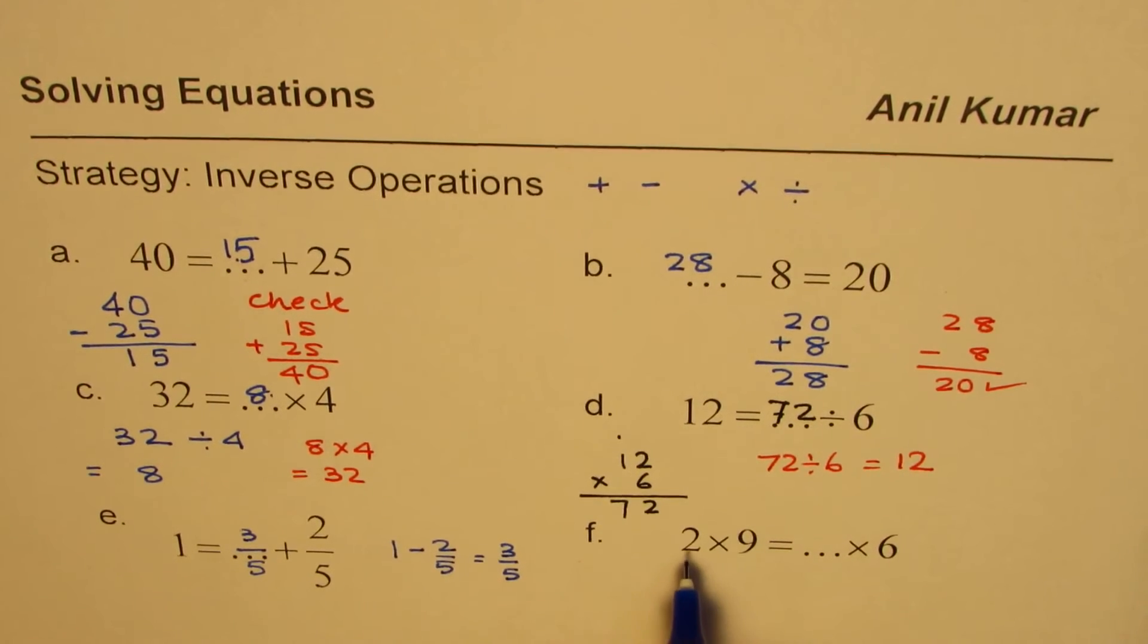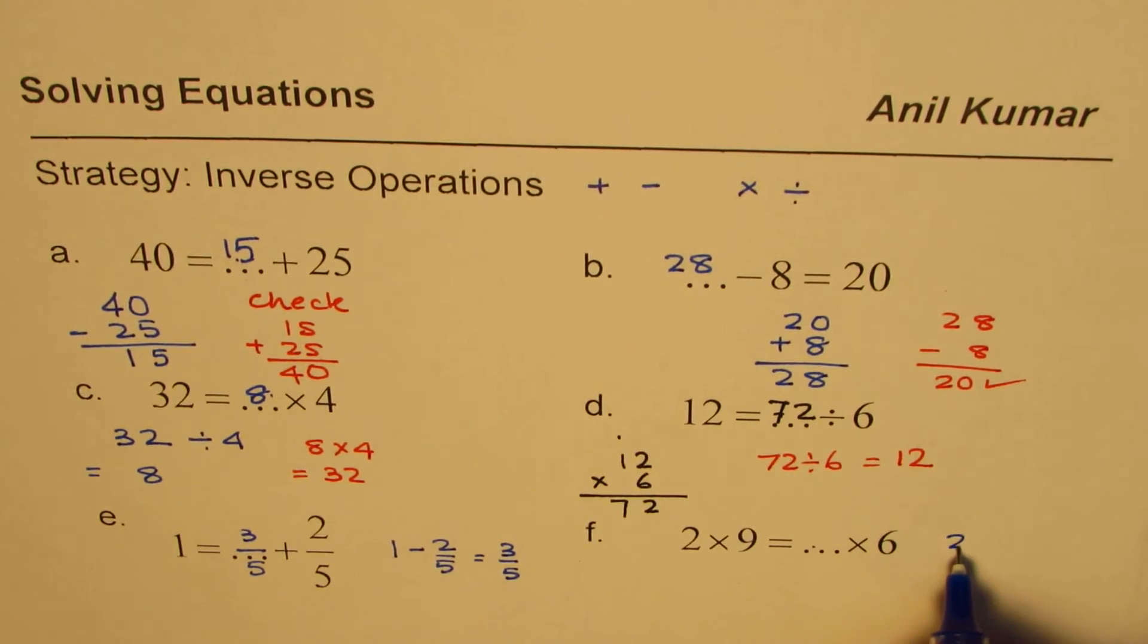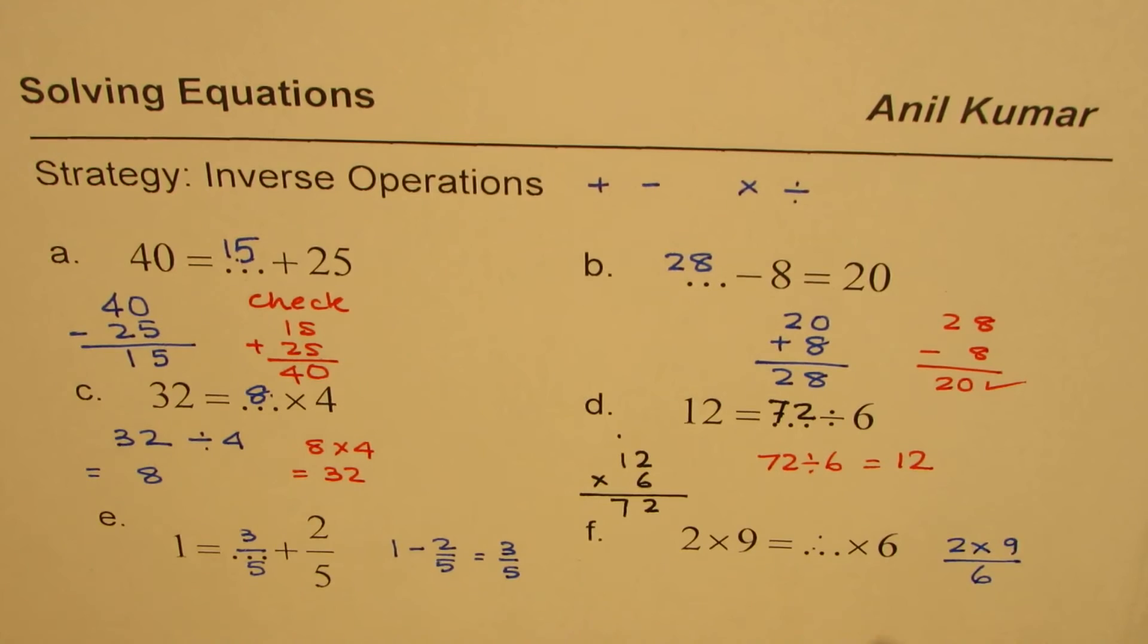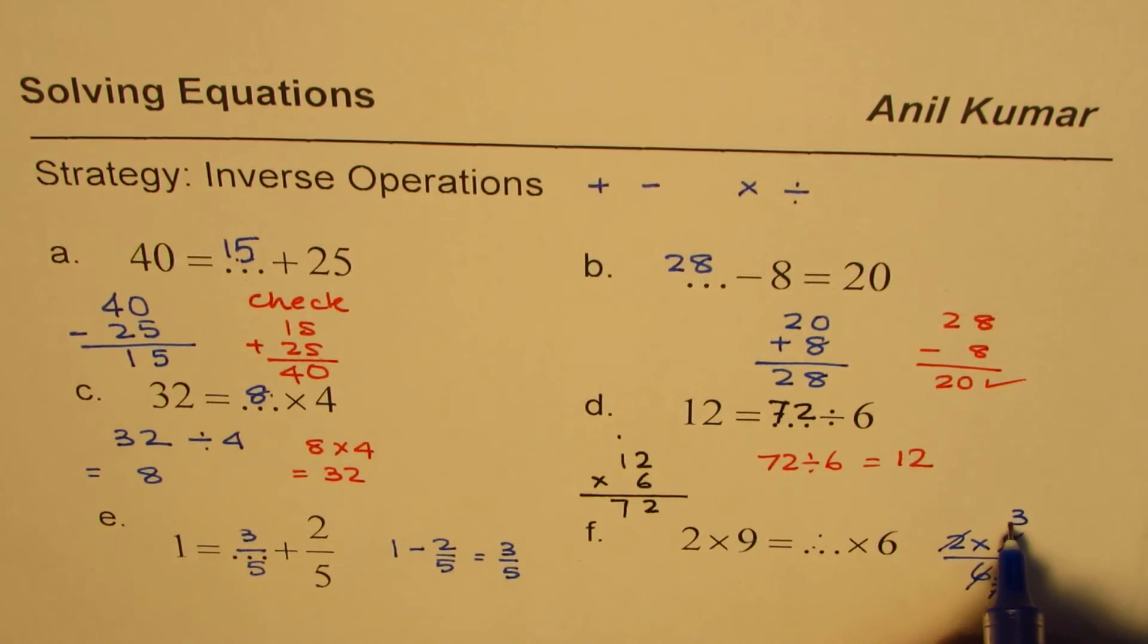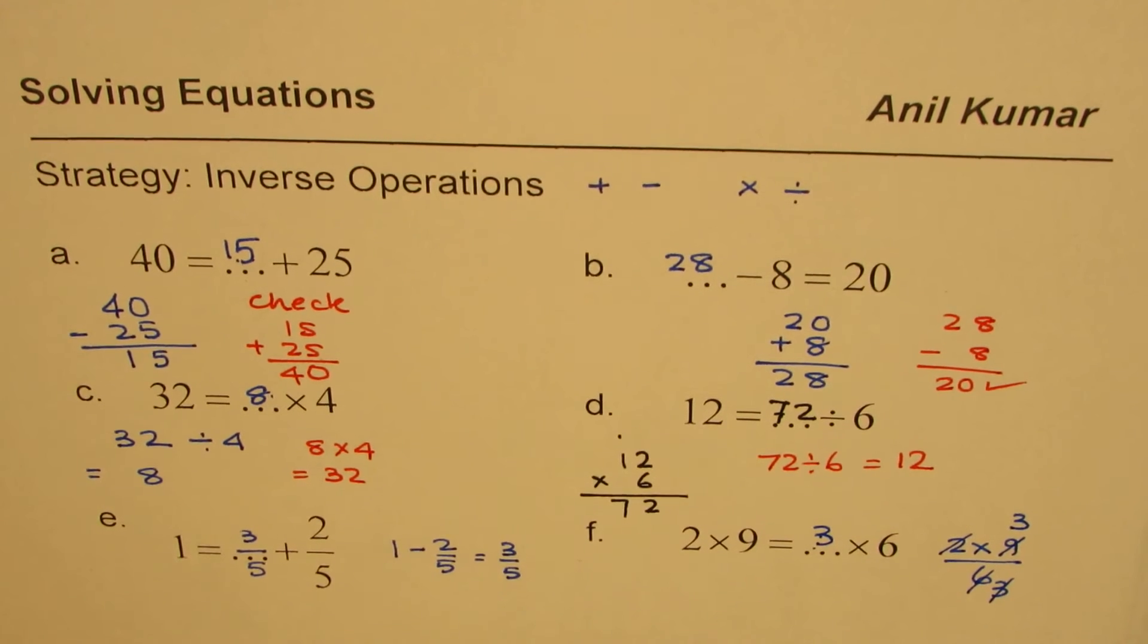Now here we have 2 times 9 equals to something times 6. So let's divide by 6. So we get 2 times 9 divided by 6 to fill in here. So that gives you 3 and 9 divided by 3 is 3. So this number should be 3.